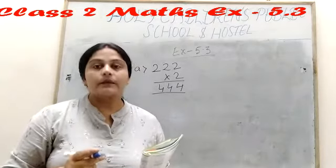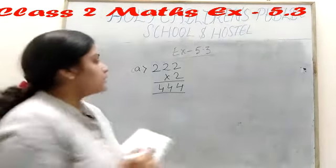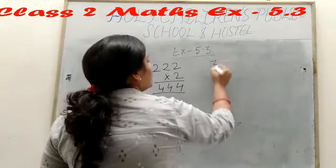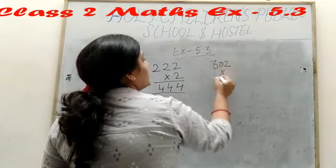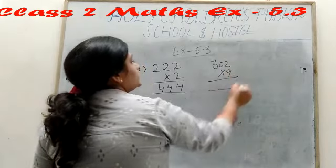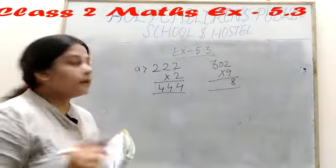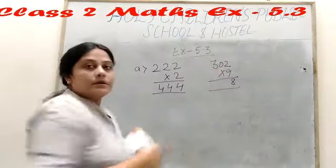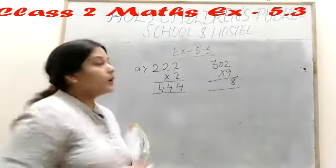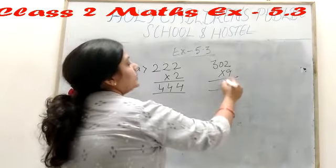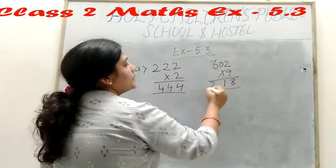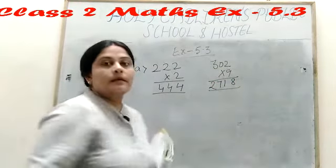Next question is 302 into 9 is equal to what? So 9 to the 18, 1 carry. 0 nines are what? 0 nines are 0. We can write here carry 1 and 3 nines are 27. Clear story.